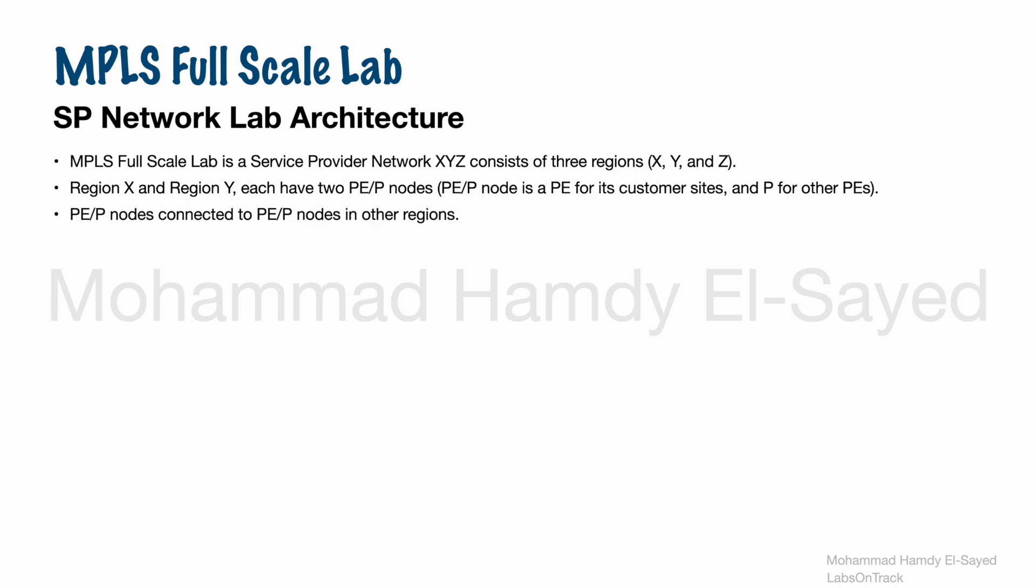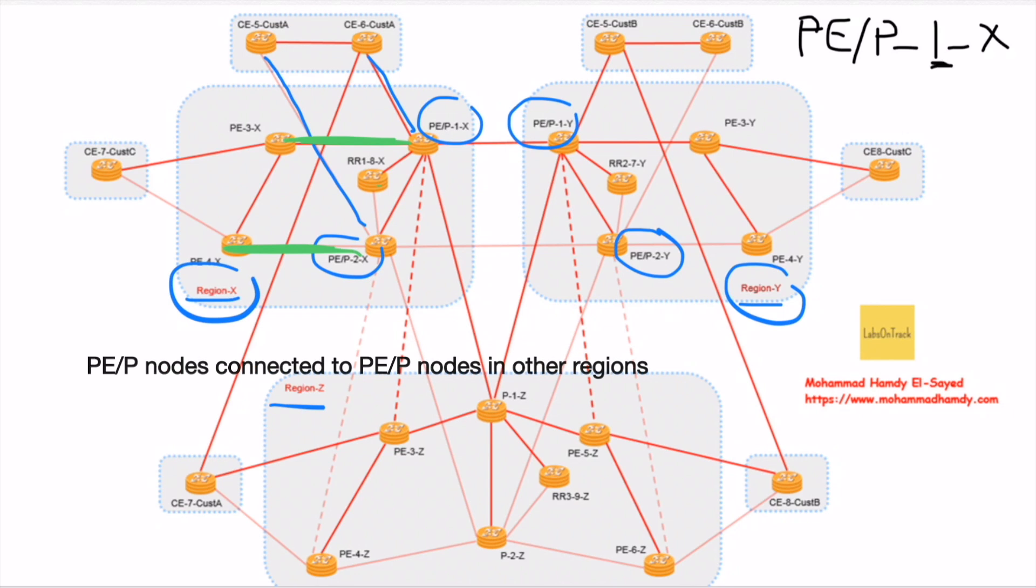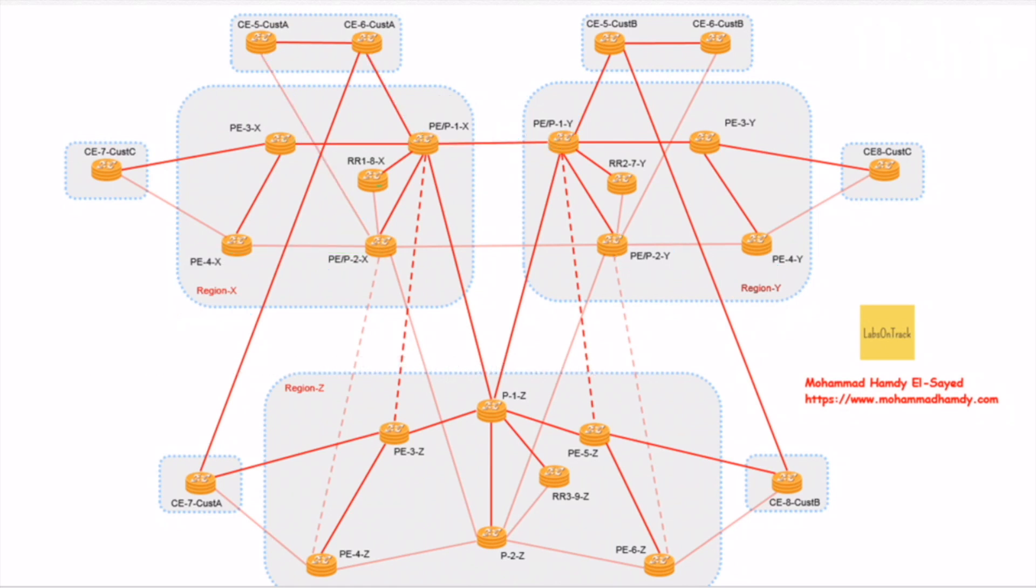PEP routers connect to other routers in different regions, for example PEP1X. It's number 1 in its region, its role is PEP router, and it resides in region X and is connected to PEP1Y, the first router in region Y. Back again to region X where we have PE3X. This router functions as PE router only. It connects customer routers, is number 3, and resides in region X, connected to PEP1X.